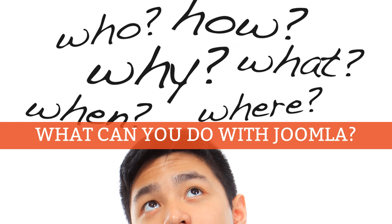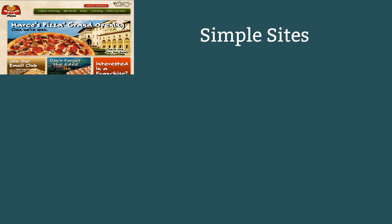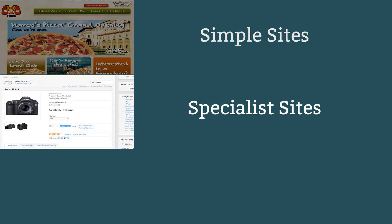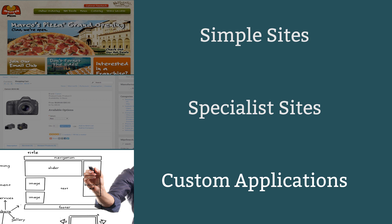Now let's take a look at the type of sites you can build using Joomla. Simple sites: on its own, Joomla is great for creating simple sites with pages of text and images. Specialist sites: thanks to extensions, Joomla websites are used to power e-commerce sites, membership sites, forums, magazine sites, blogs, and many other uses. Custom applications: if you need to develop some functionality that goes beyond the standard features of Joomla and no extension exists that does the job, then you can create a custom application. As the Joomla framework is open source, web programmers can modify the existing functionality and add new functionality.